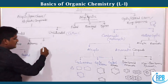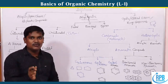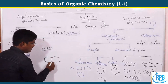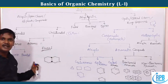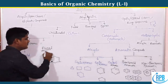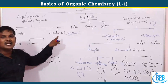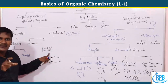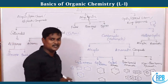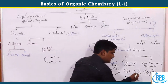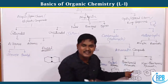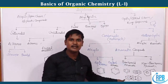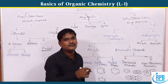Fused cyclic compounds are those where two adjacent carbon atoms connect two different rings. For example, naphthalene has two adjacent carbons shared between two rings — it is a fused compound. Anthracene is also a fused type compound.